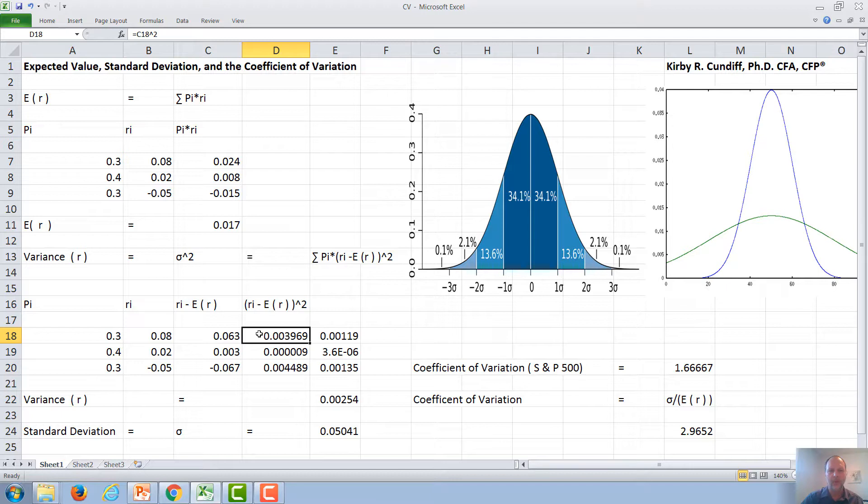We can square each of these numbers, then multiply this number, which is ri minus e hat squared, times the probability. Do that for each of them, and then sum all of these numbers to get the variance. The standard deviation is then the square root of the variance.